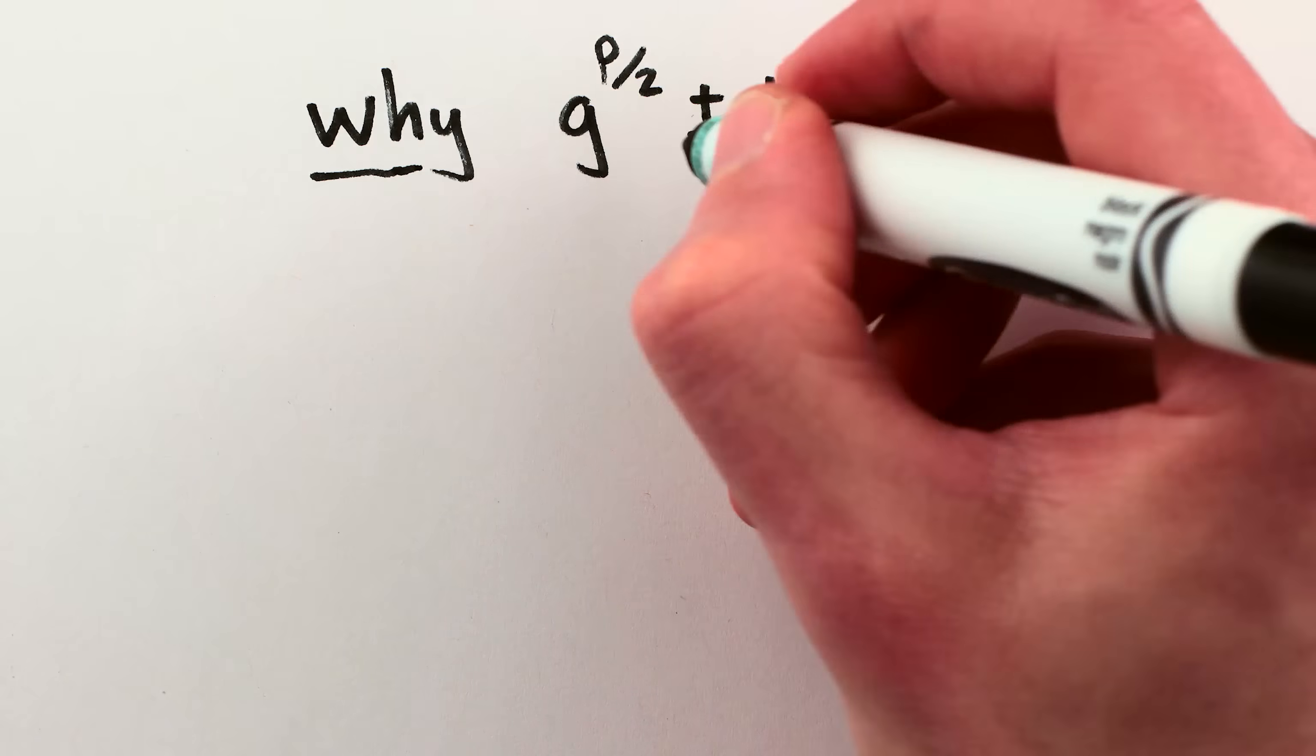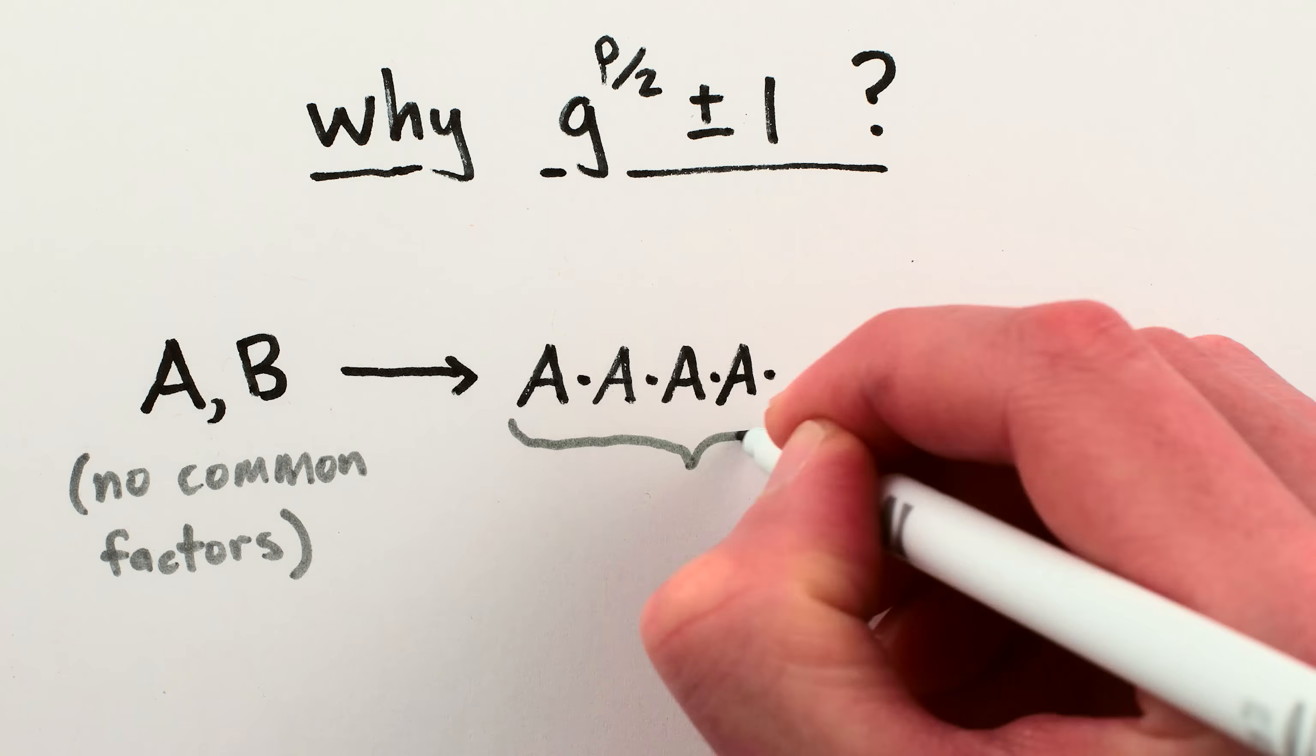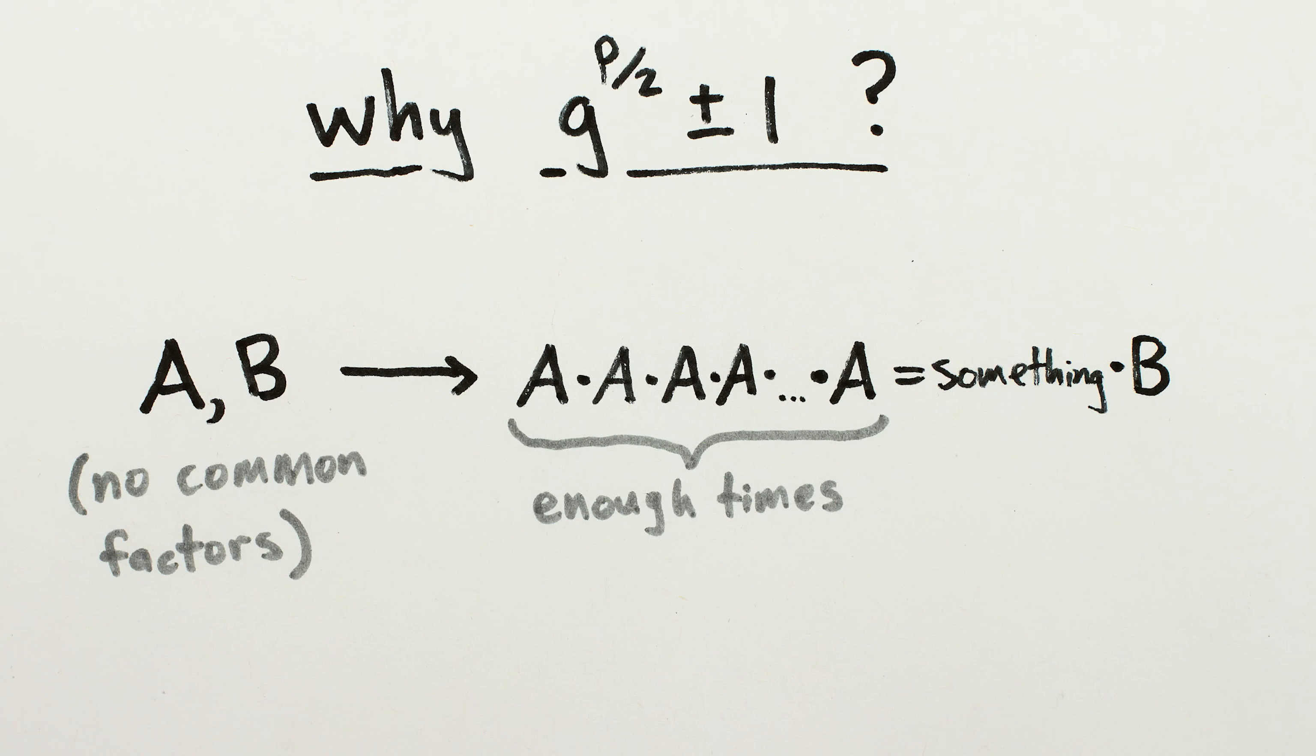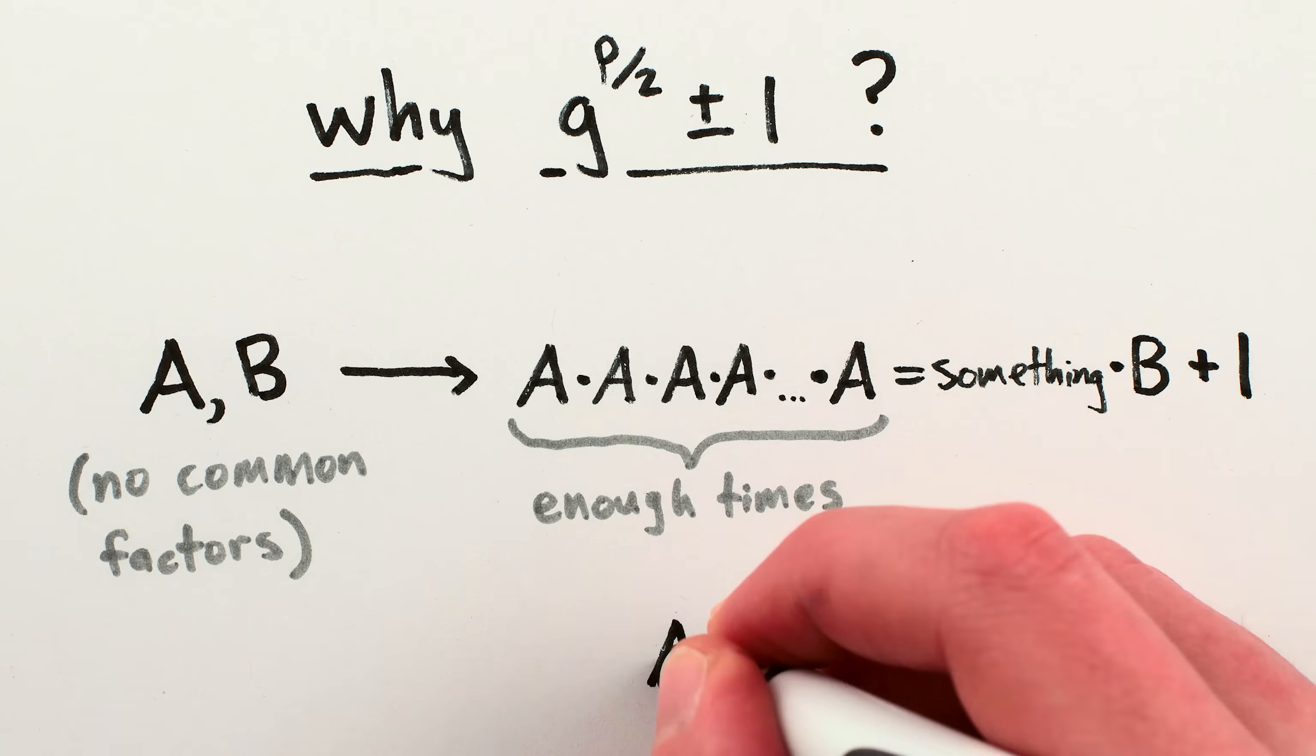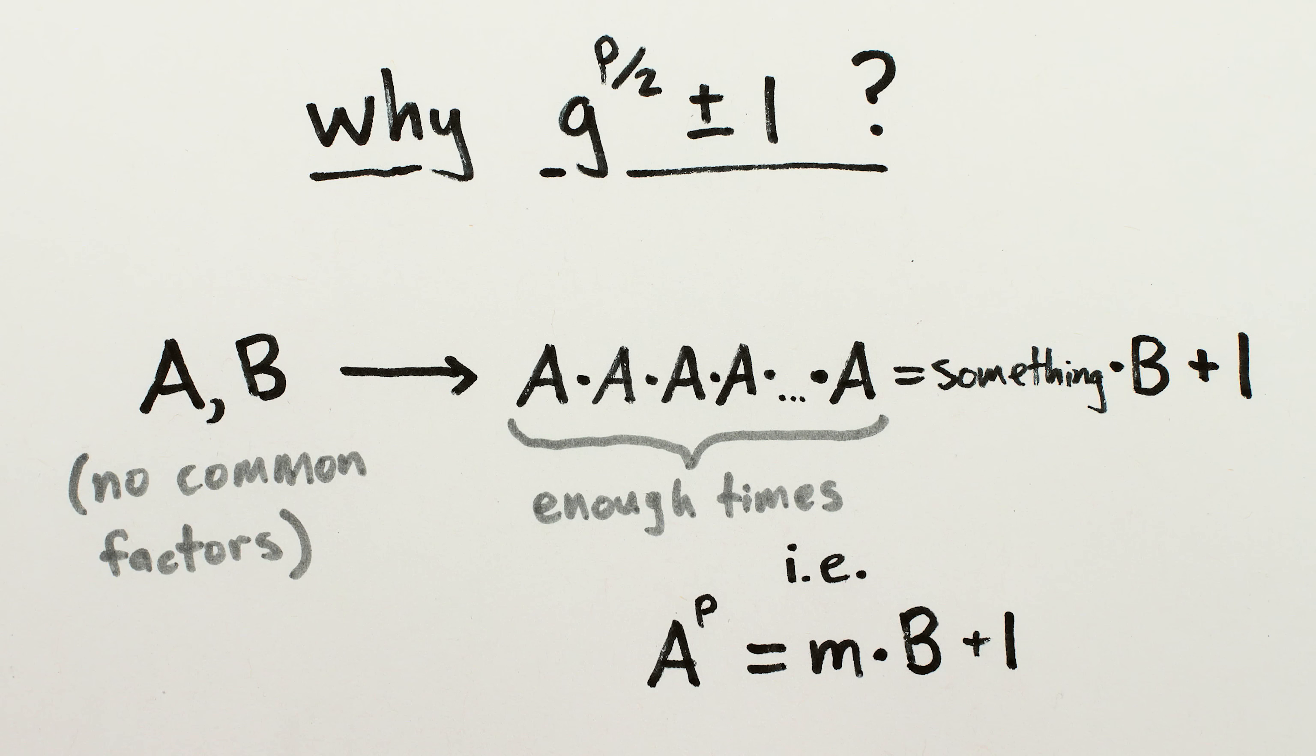The trick is based on a simple mathematical fact. For any pair of whole numbers that don't share a factor, if you multiply one of them by itself enough times, you'll eventually arrive at some whole number multiple of the other number, plus 1. That is, if a and b are integers that don't share factors, then eventually a to the p will be equal to m times b plus 1, for some power p and some multiple m.